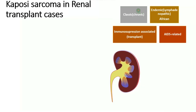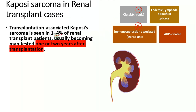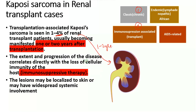Moving on to immunosuppression-associated Kaposi's sarcoma. This is seen in about 1–4% of renal transplant cases after one or two years of the transplant, and is directly related to the loss of cellular immunity of the host. Unlike classic Kaposi's sarcoma, the lesions can be localized to the skin or they can also have widespread systemic involvement.